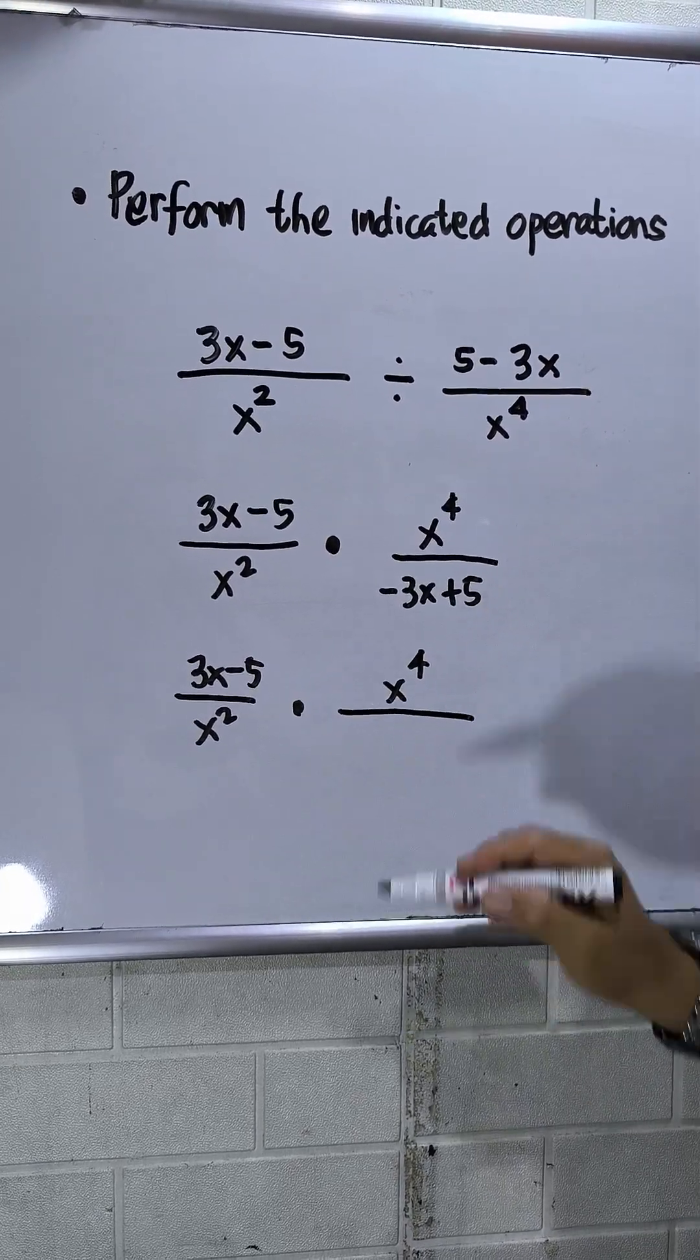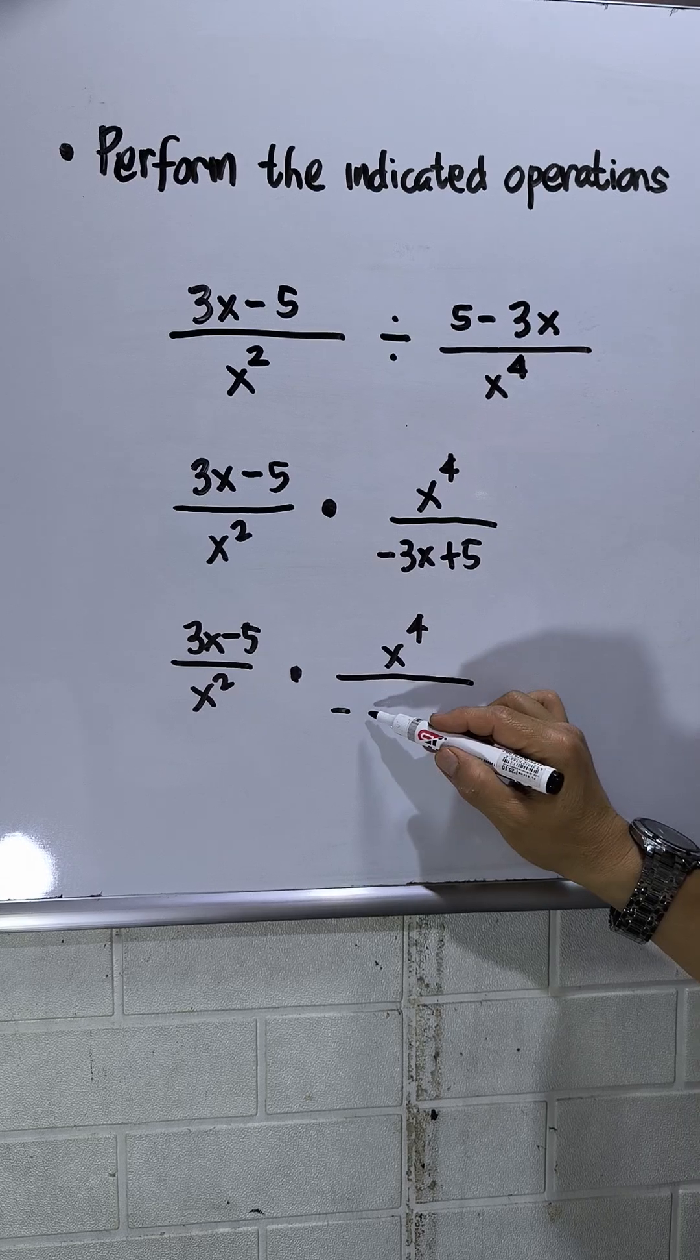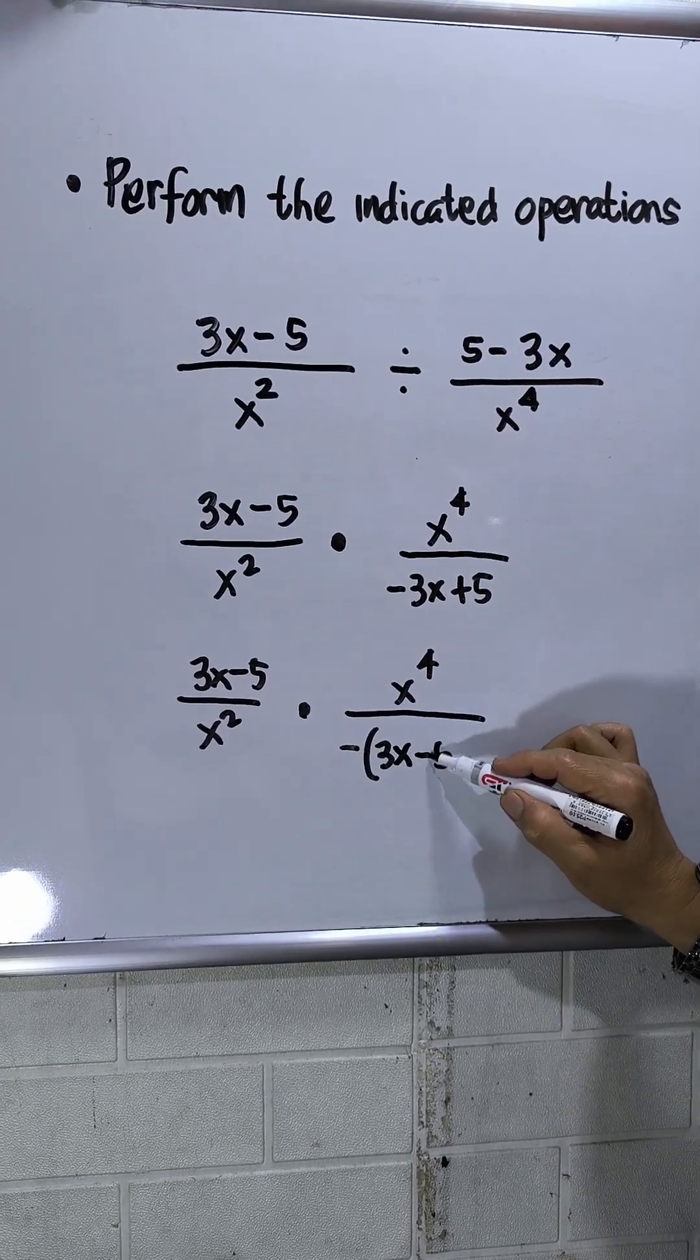And then for my denominator, I will factor out the negative sign. So this would be 3x minus 5.